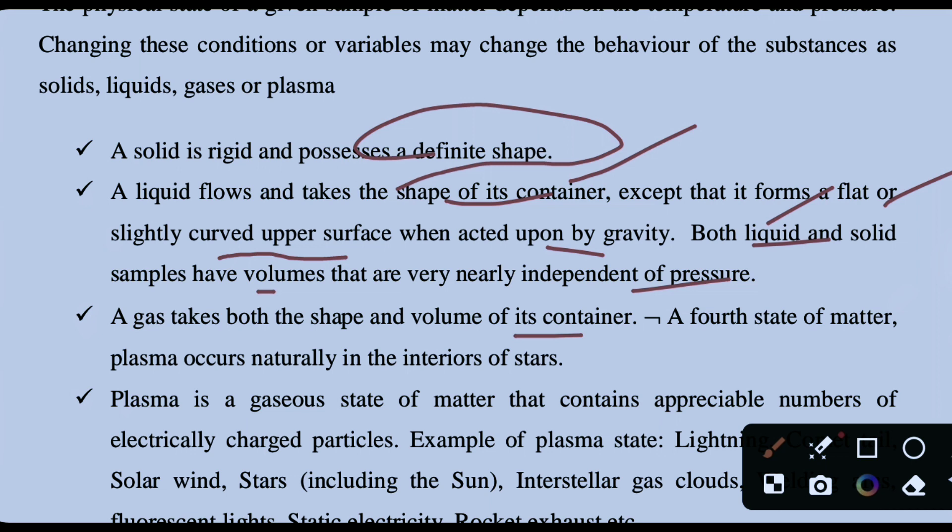A gas takes both the shape and volume of its container. A fourth state of matter, plasma, occurs naturally in the interior of stars. Plasma is a gaseous state of matter.